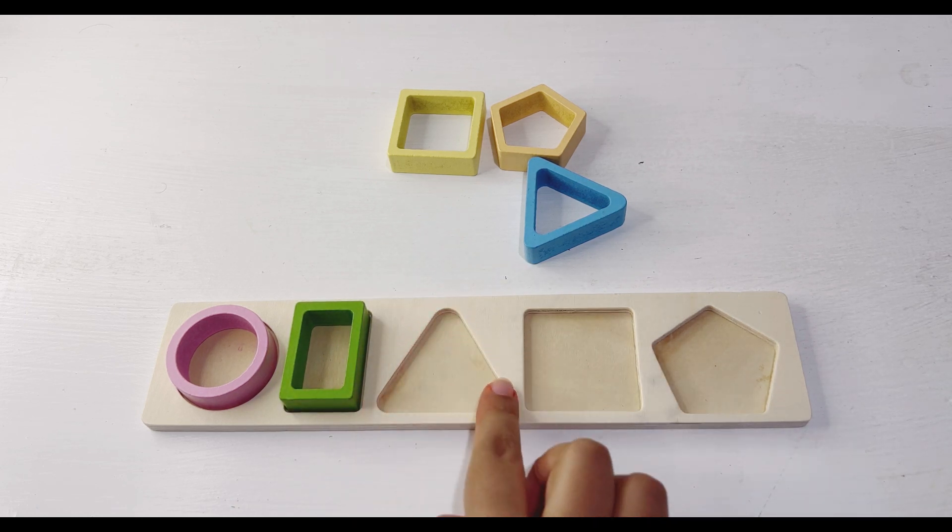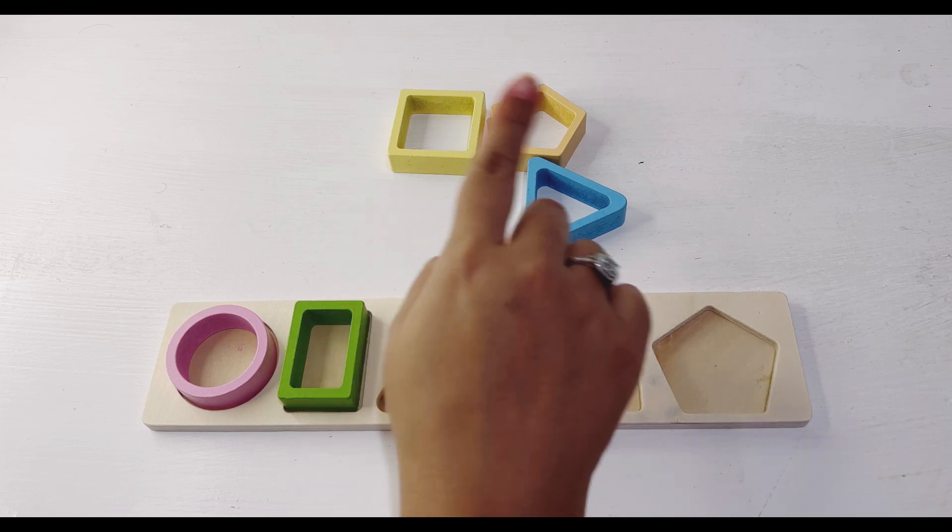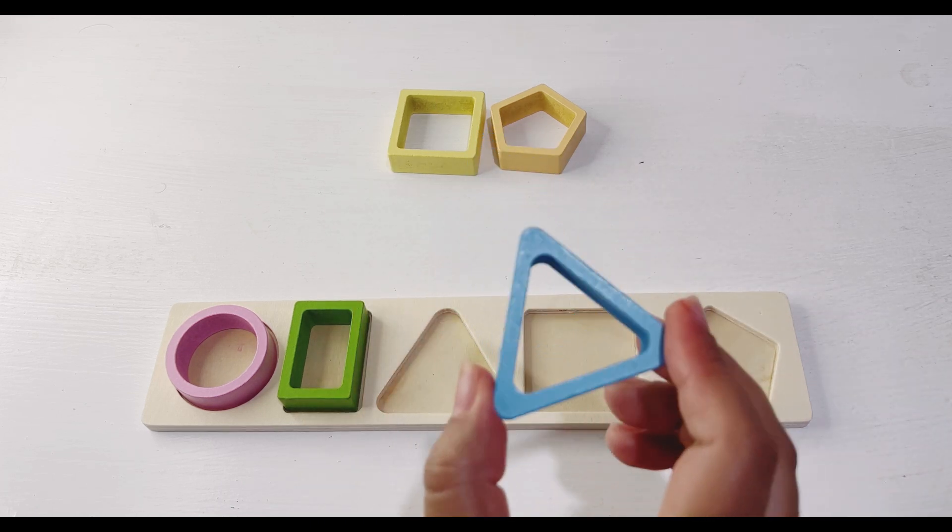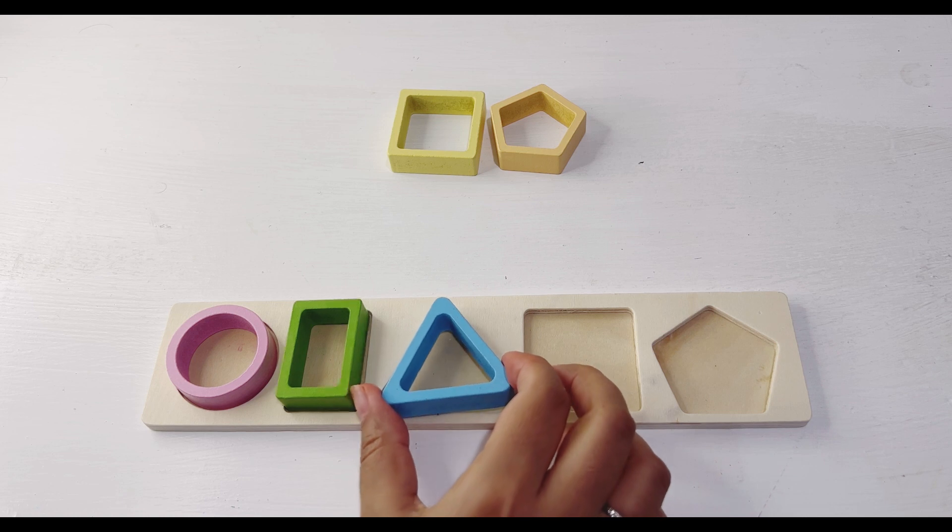Our next shape is triangle. It has three corners. Let's find triangle. Yeah, here it is, blue triangle. Let's put it in the right place.